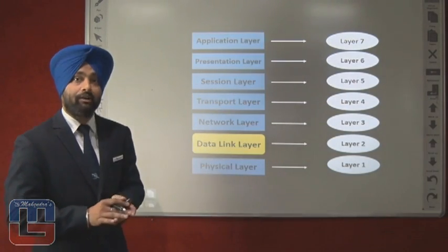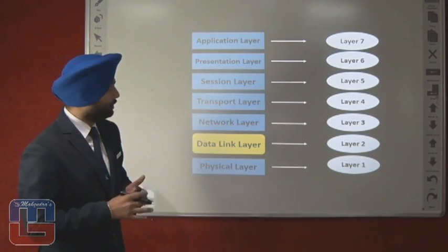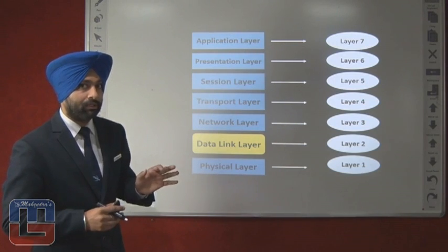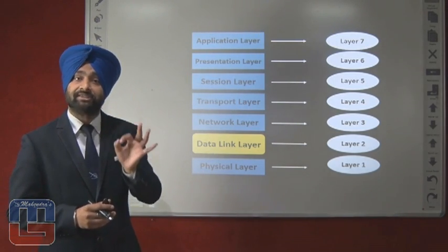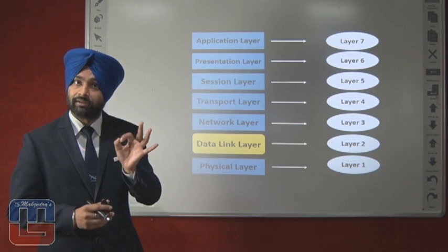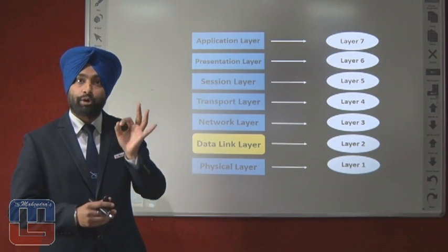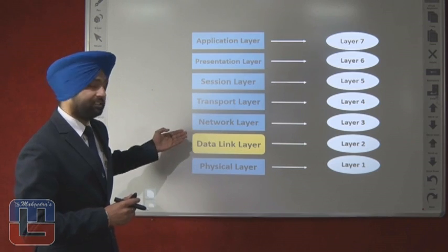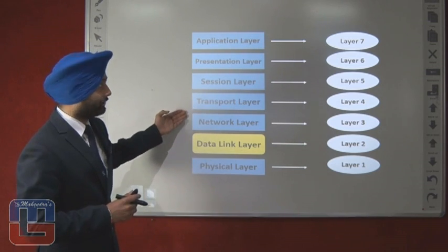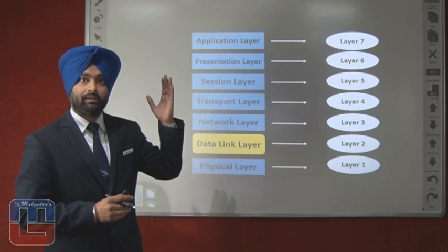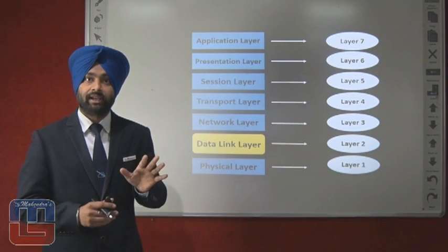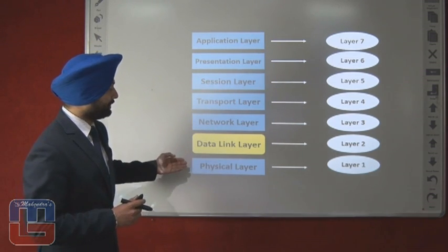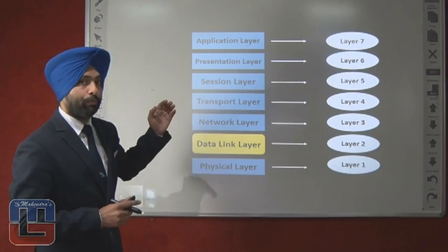First of all, let us have a view of the 7-layer architecture of the OSI model. The fact that should be memorized is we have to follow the bottom-top approach. The total layers in OSI are 7, following the bottom-top approach.